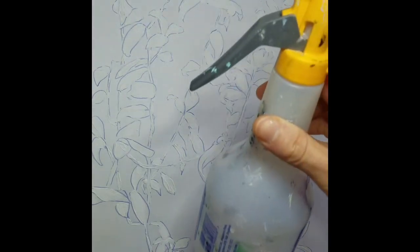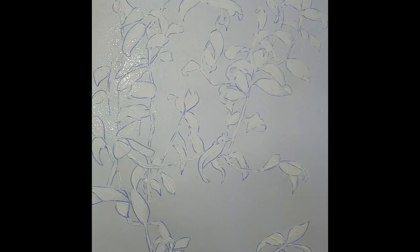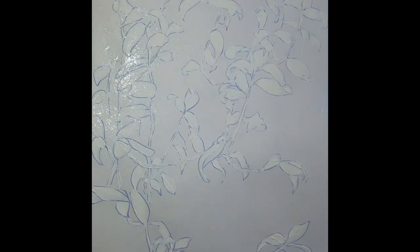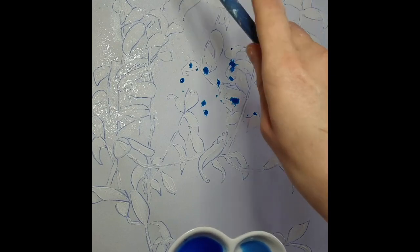Once it's dry, you can take your spray bottle—try to get one that's got a fine mist setting—and spray the whole paper so it's slightly damp. Then get some very watered-down watercolor paint. I've gone for blue here, and just splat it on.